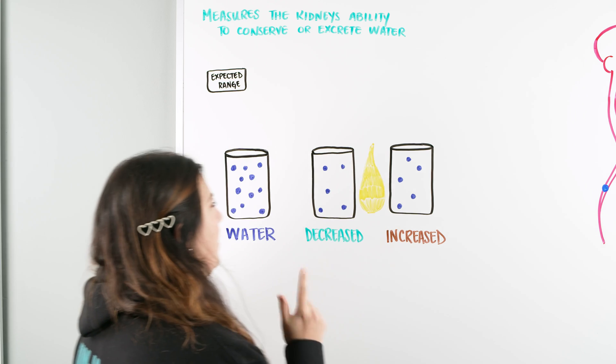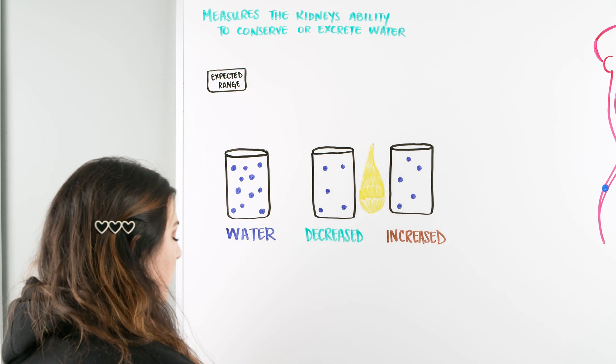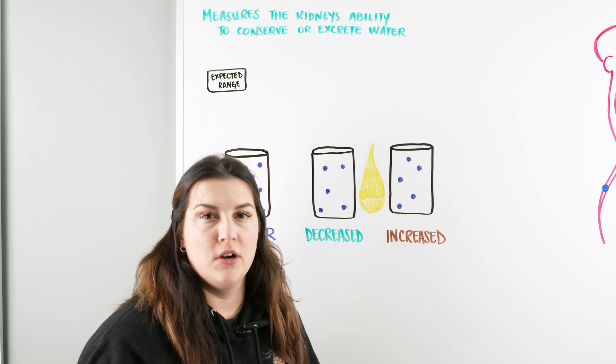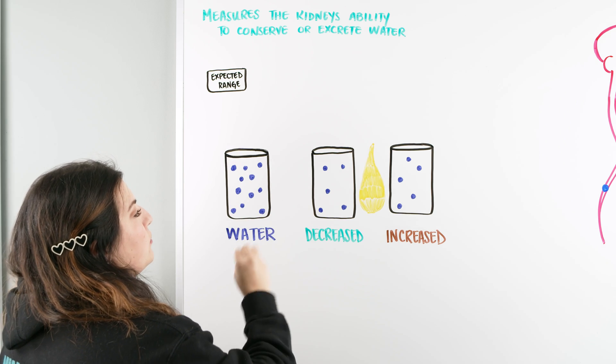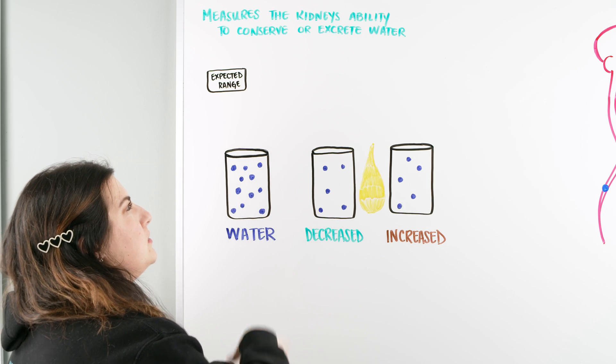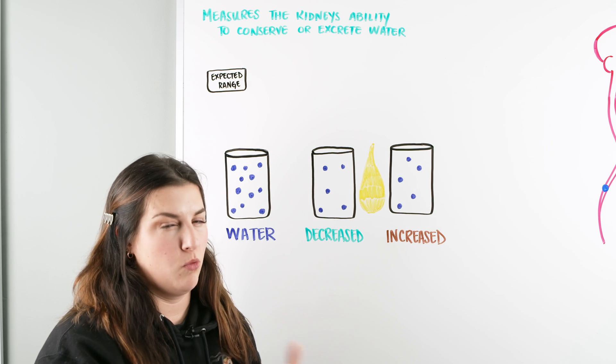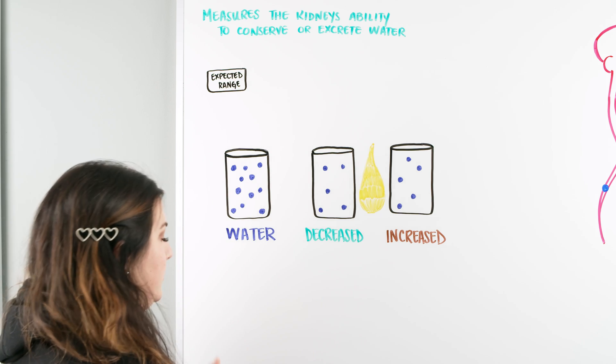So when we talk about urine specific gravity, we're going to be talking about a measurement that we use in order to measure the way that our urine is able to be basically concentrated or dilute. So we're going to be measuring what the kidney's ability is to conserve or excrete that water, or to make urine essentially.